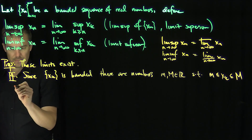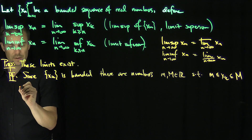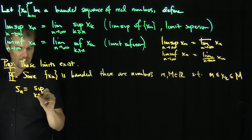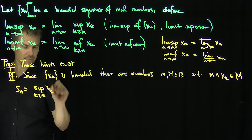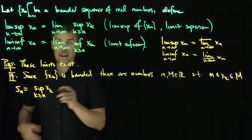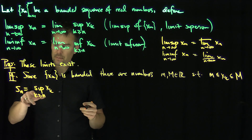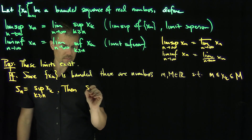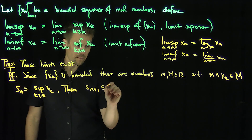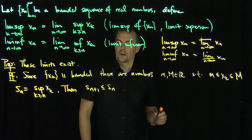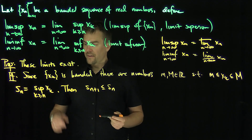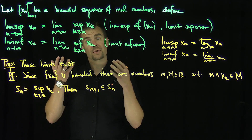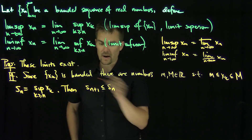Let sn be the supremum over k greater than or equal to n of xk. This sequence sn is actually decreasing — as n gets bigger and bigger, we're taking the supremum over a smaller set, so the largest element only gets smaller. So sn is monotone decreasing.